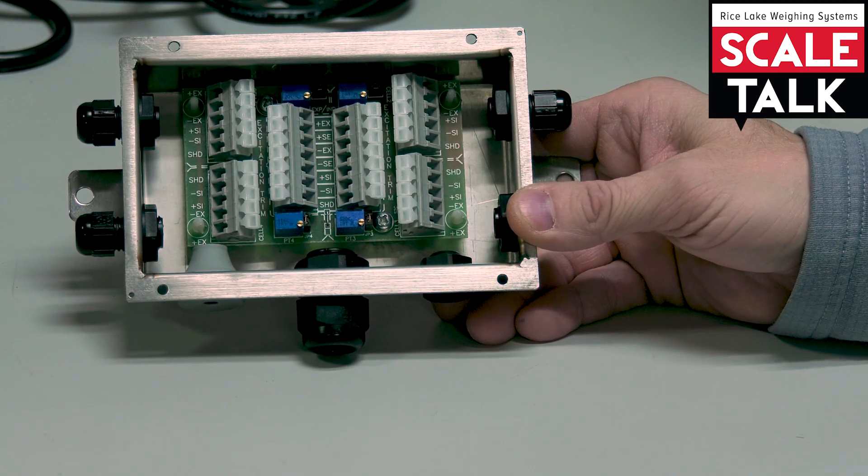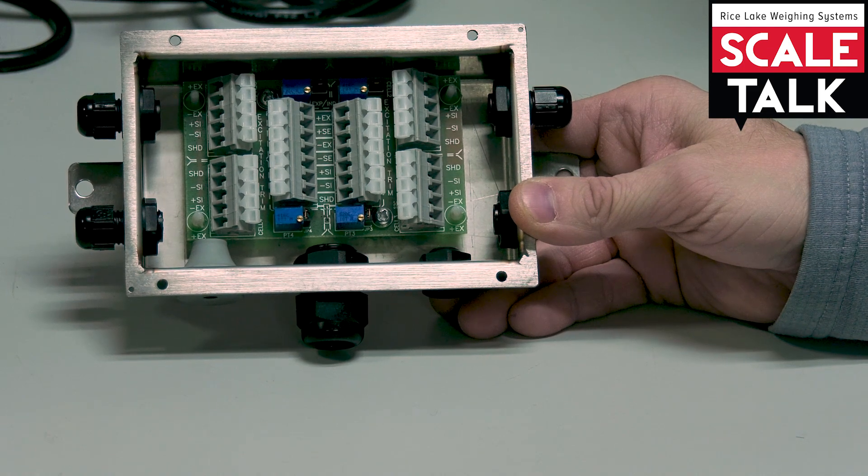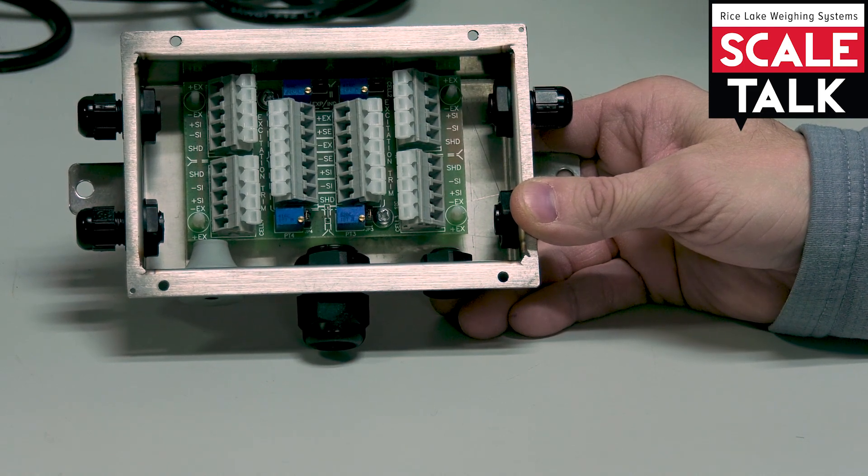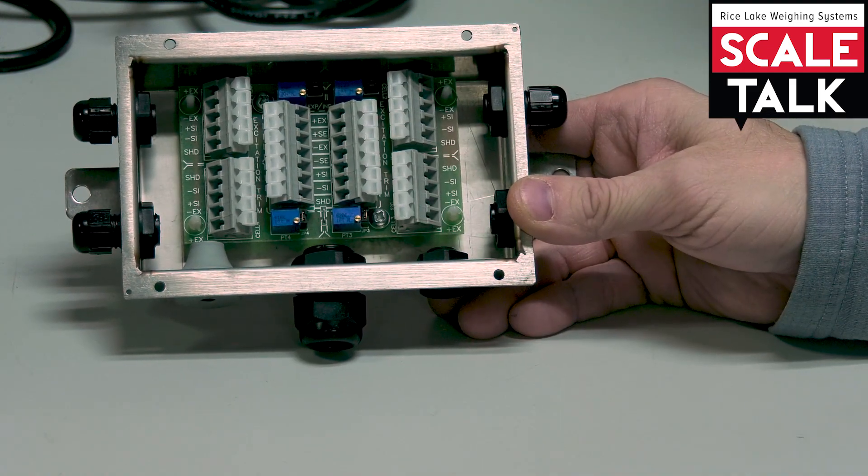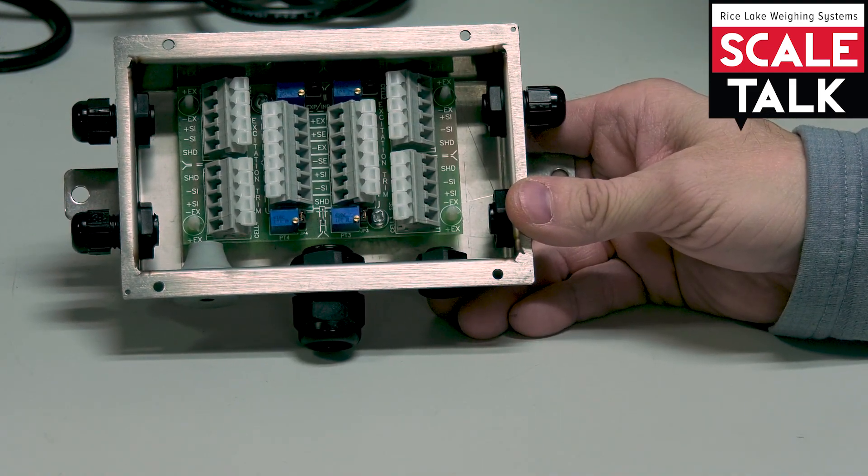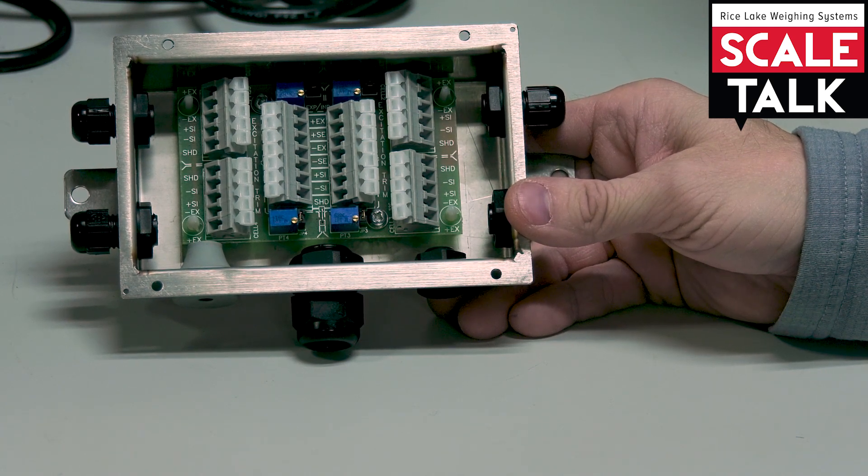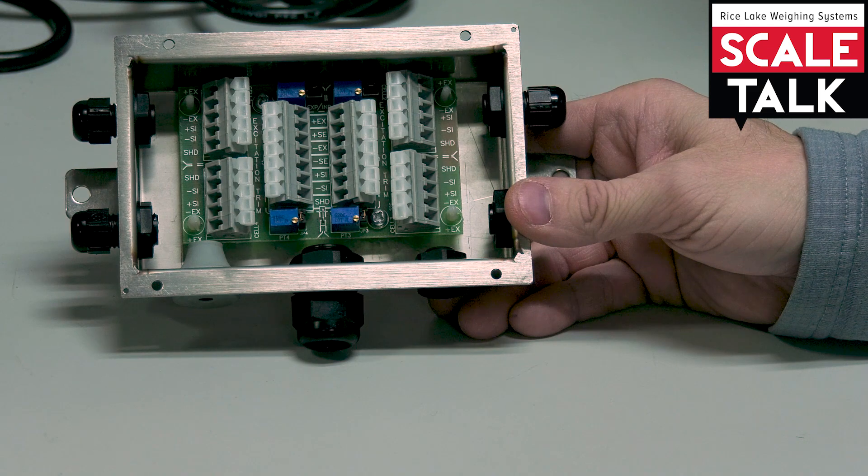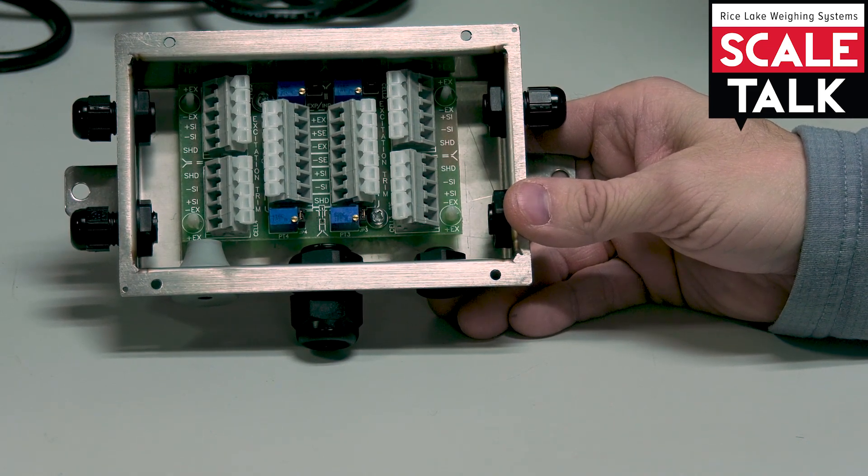And then finally, this provides a very convenient place for us to take all the necessary troubleshooting measurements that we might need to make. Because all of my load cell connections are going to come into this one box together. And that's certainly a lot easier than running around underneath a truck scale that might have eight or ten load cells and trying to find them all individually.